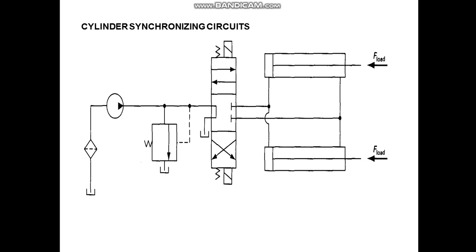Let us try to understand the cylinder synchronization circuit. We need to understand the difference between sequencing and synchronization. Sequencing means we have to achieve the motion of multiple cylinders one after the other — extension of cylinder 1 takes place first, then at the end of extension of cylinder 1, extension of cylinder 2 will start, then cylinder 3 and so on. In retraction, retraction of cylinder 3 starts first, then cylinder 2, then cylinder 1. That was sequencing.